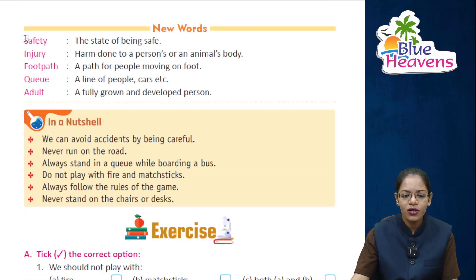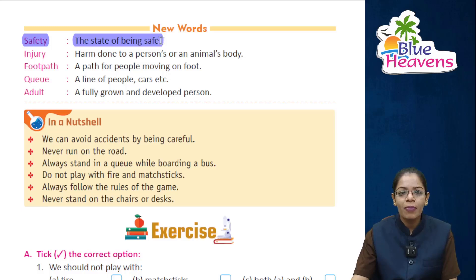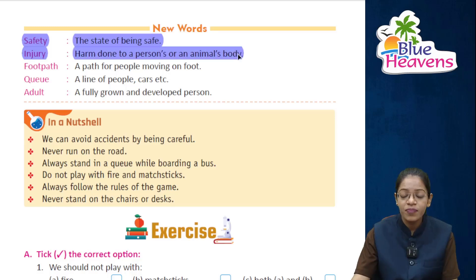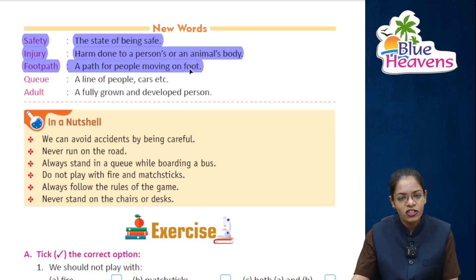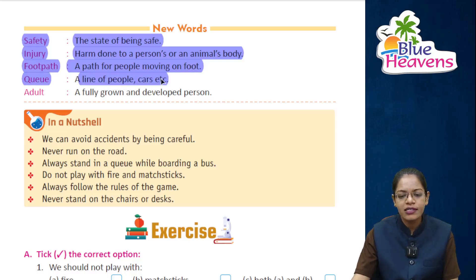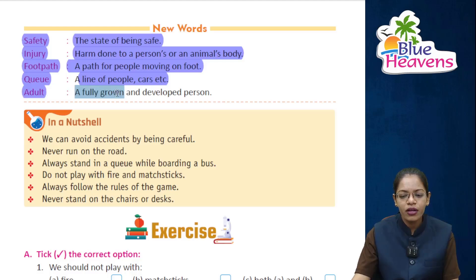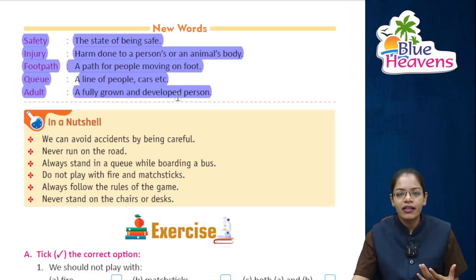New vocabulary: Safety means the state of being safe — how we keep ourselves secure. Injury means harm done to a person's or animal's body. Footpath is a path for people moving on foot — for pedestrians. Queue means a line of people or cars. Adult means a fully grown and developed person.